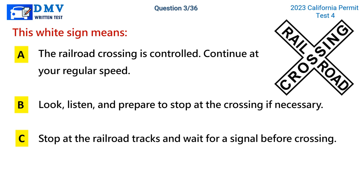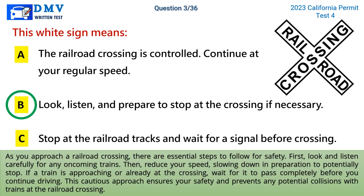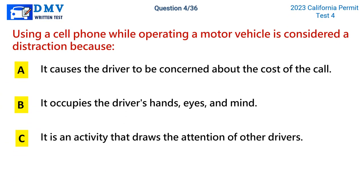Question 3: This white sign means. A) the railroad crossing is controlled, continue at your regular speed, B) look, listen, and prepare to stop at the crossing if necessary, C) stop at the railroad tracks and wait for a signal before crossing. The correct answer is B. As you approach a railroad crossing, look and listen carefully for oncoming trains, then reduce your speed. If a train is approaching or already at the crossing, wait for it to pass completely before continuing. This cautious approach ensures safety and prevents collisions.